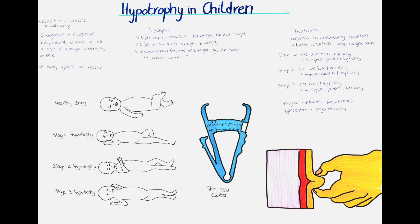Or disorders in the digestion and assimilation of proteins, disorders leading to increased energy consumption such as acute or chronic infections, malignancies, thyrotoxicosis, or disorders of tissue metabolism such as cardiac or renal diseases, chronic pneumonia, or diabetes. Also, disorders in the overall metabolism such as lipidosis or galactosemia can occur. This is called endogenous hypotrophy.